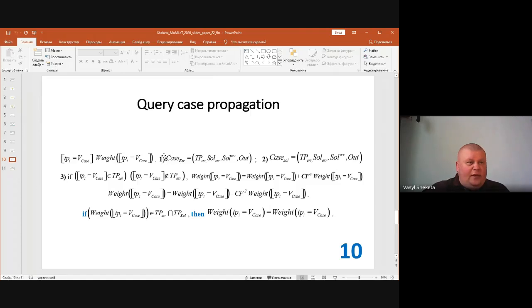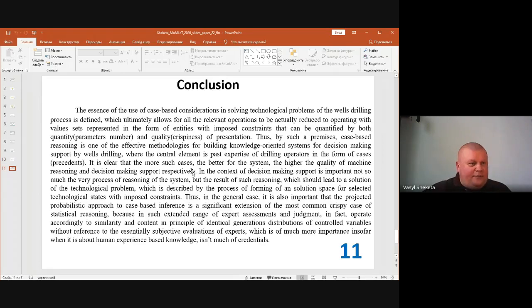By query case propagation, we proceed to all these weighted solutions and weighted cases. Finally, we form rules with antecedents and consequences, which is a result of transition from data to knowledge itself. In the projected case-based inference approach, we have a way to operate similarity and content distribution.